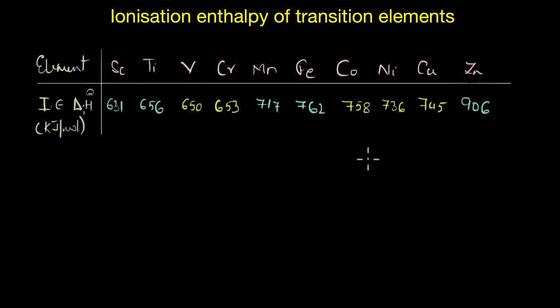However, there are a few exceptions. For example, vanadium and chromium show slightly lower values than their predecessor. Similarly, towards the end of the series, cobalt, nickel and copper also show slightly decreasing values of ionization enthalpy.